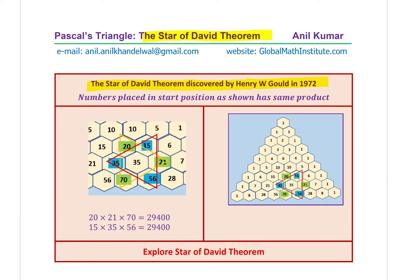The pattern basically tells you that the numbers placed in star positions have the same product. In Pascal's Triangle, you can see some numbers are placed around in a circular form, but they form two stars. One is shown with numbers colored in blue forming a triangle, and the other with numbers colored in green also forming a triangle. When these two triangles overlap, they give the look of a star. The product of the numbers in green is the same as the product of the numbers in blue.